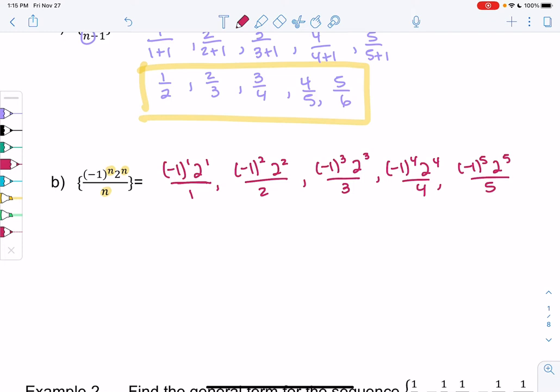So what is this negative 1 doing? The negative 1 is just kind of rotating between negative and positive. So negative 1 to the 1 would be negative. Negative 1 to the 2 would be positive. Negative 1 to the 3 would be negative. So you'll just see that it's rotating. Even powers are positive, so negative 1 to the 4th is positive. And odd powers are negative, so negative 1 to the 5th is negative. So that's all the negative 1 is doing, is rotating between positive and negative signs.